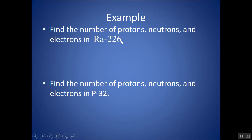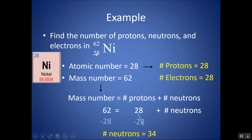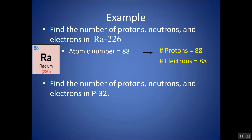These next two examples are written in the other notation — symbol, dash, mass number. You might say there's no atomic number, so how do I know the protons and electrons? You can look up Ra in the periodic table — it's radium — and see it has an atomic number of 88. So there are 88 protons and 88 electrons. For neutrons: 226 minus 88 gives 138.